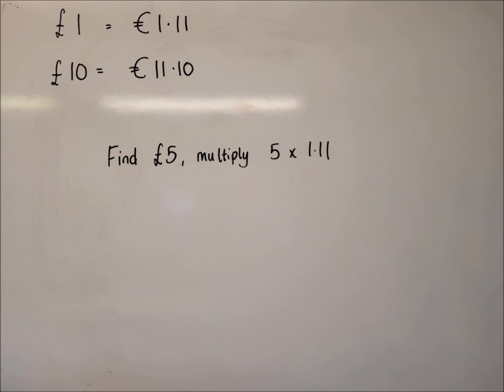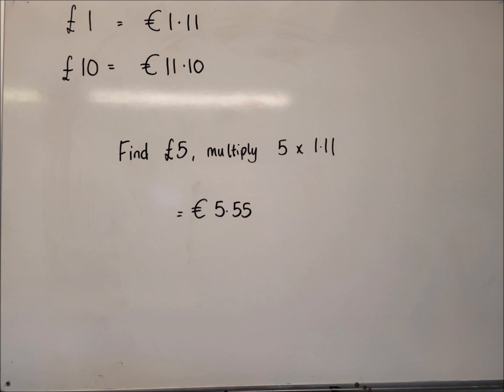So imagine we have £5 and we wanted to buy some euros. What we would do is do 5 multiplied by 1.11. You might be able to even do that one mentally. If not, put it into your calculator. Make sure you're putting in the decimal point where it's meant to be. So hopefully you get €5.55 as your answer. That is basically as straightforward as it is. So if you had £5, you'd be able to buy €5.55.